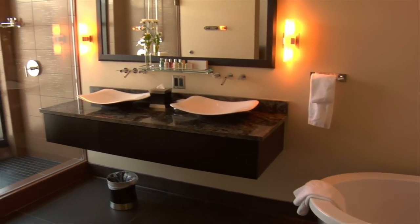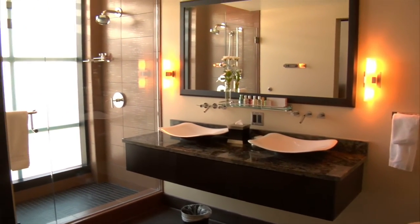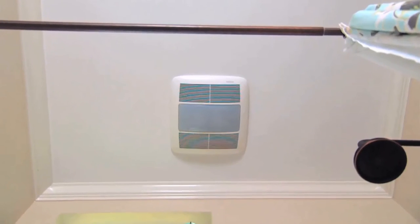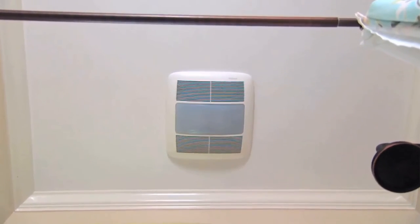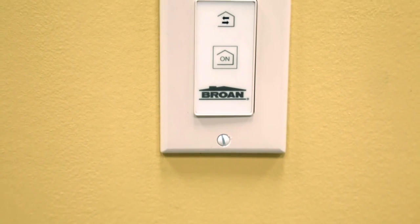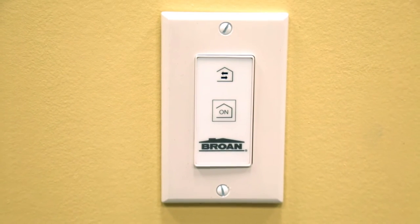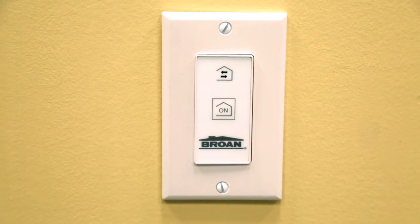When the ERVS-100 exhaust register is located in a bathroom, the product can also replace one bath fan. In this configuration, the unit should be connected to a 20-minute override control in the bathroom. Wire the control switch according to the package instructions.